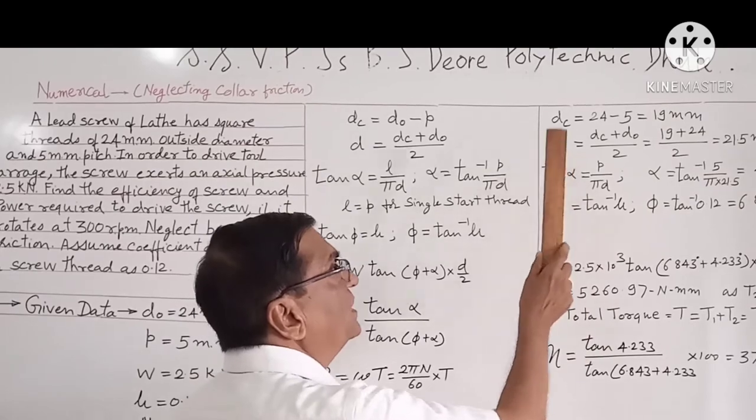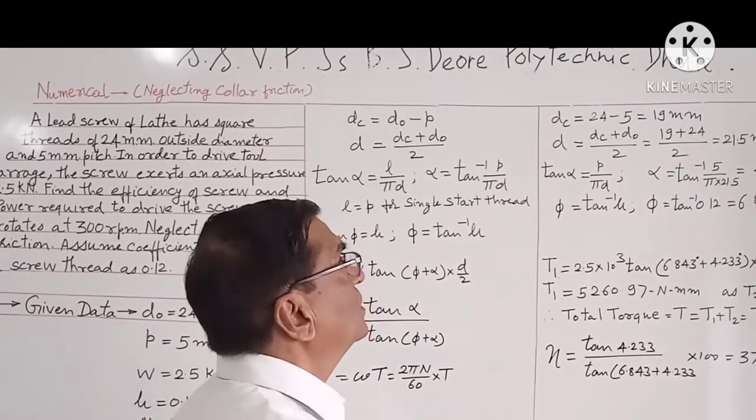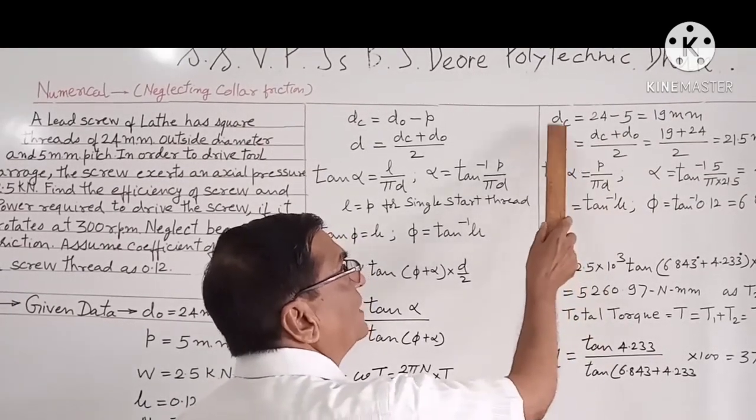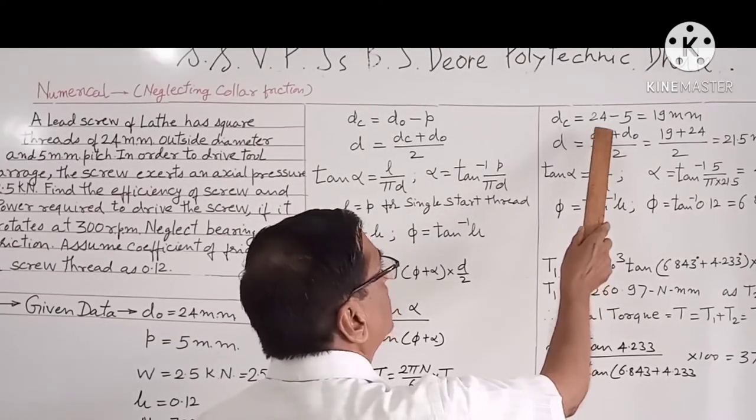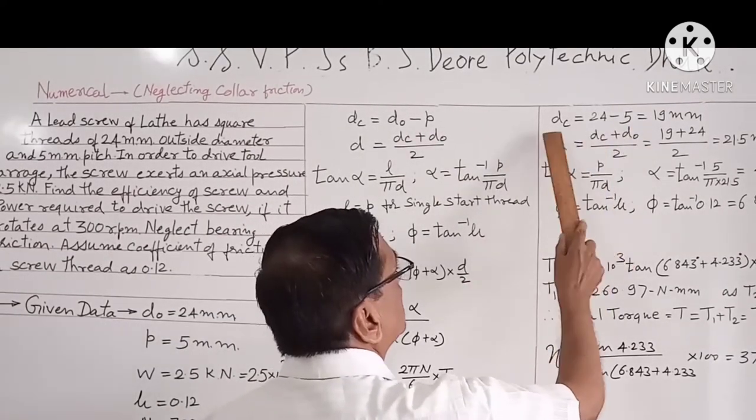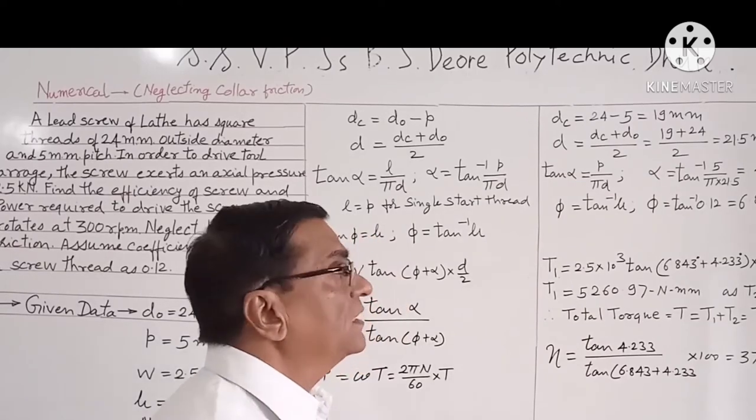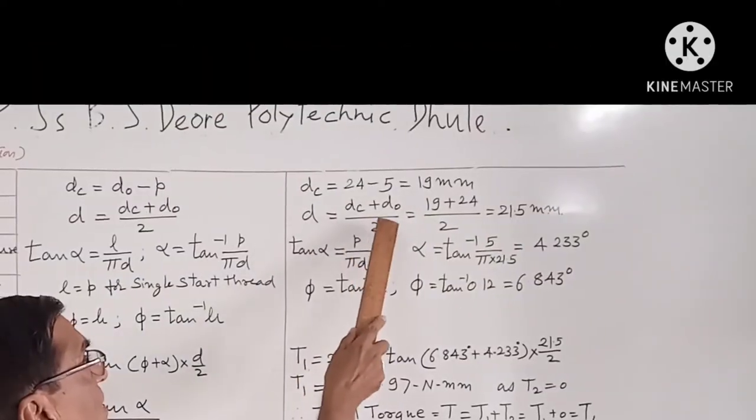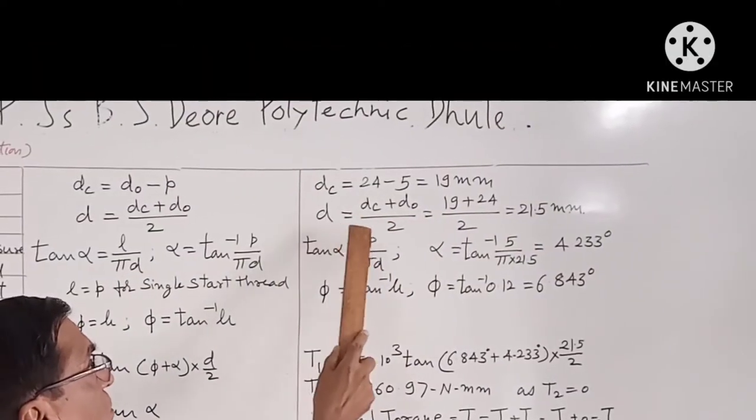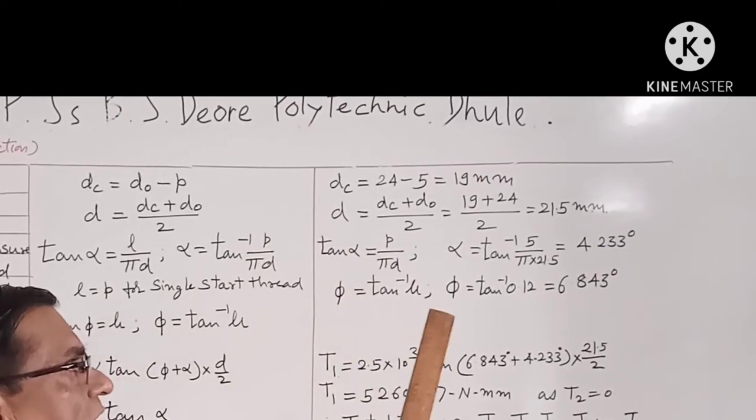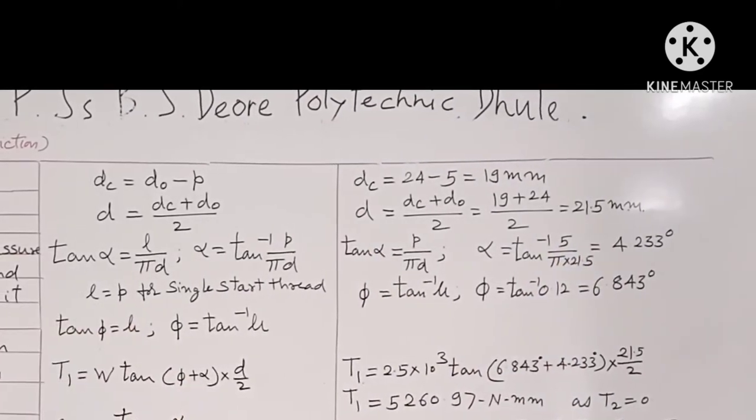First we calculate the mean effective diameter of the screw. For that we will calculate DC by putting the values of outside diameter and pitch. DC comes out to be 19 millimeter, and DC plus DO upon 2, so mean effective diameter comes out to be 21.5 millimeter.